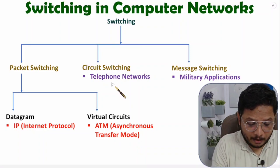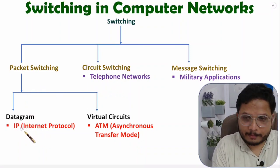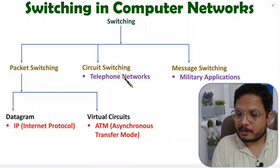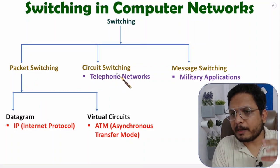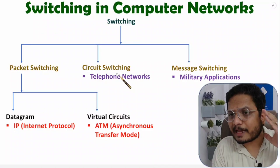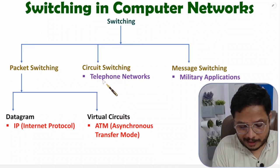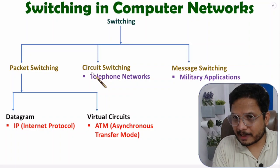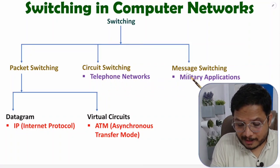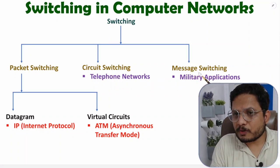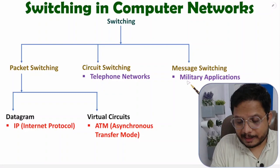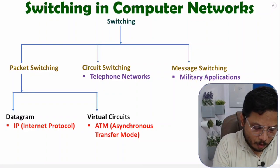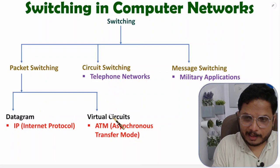Right now we are using internet protocol along with packet switching. Circuit switching was implemented way back in the 1960s and 1970s in telephone networks. Message switching is used in military applications as well as satellite communication. I'll explain all these categories with practical examples.